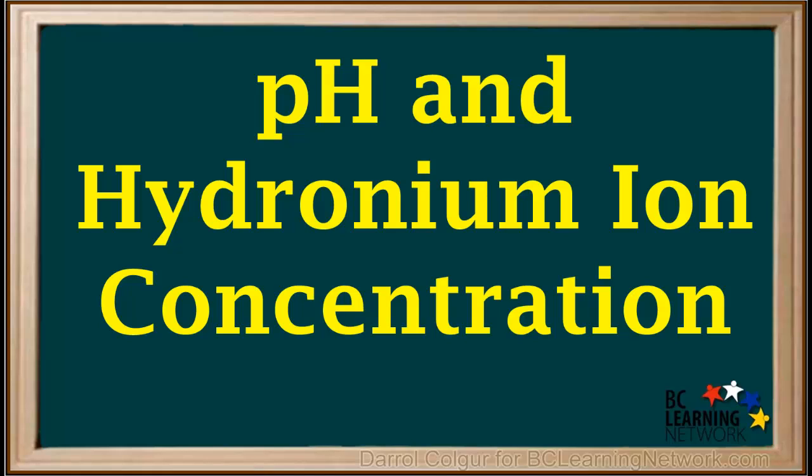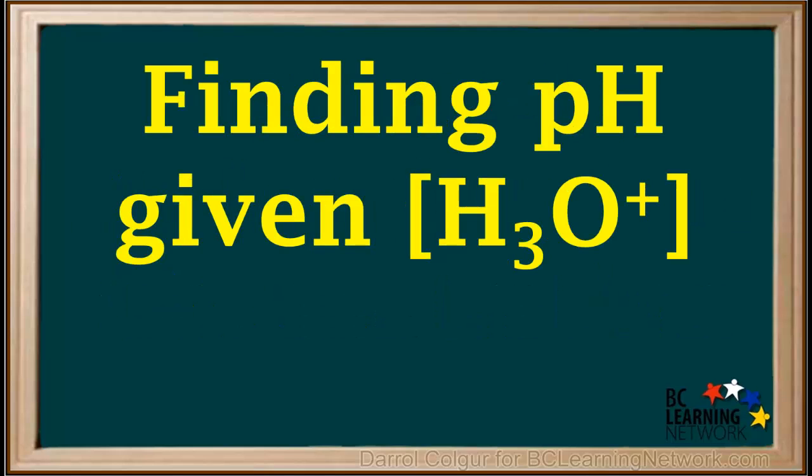pH is a very common measure for the acidity of a solution. Here we'll define it and show you how to convert from hydronium ion concentration to pH, and from pH to hydronium ion concentration. We'll start by showing you how to find the pH of a solution if we're given the hydronium ion concentration.